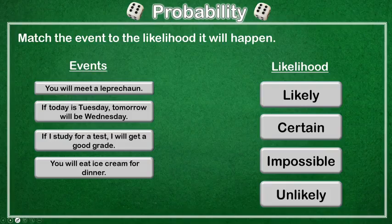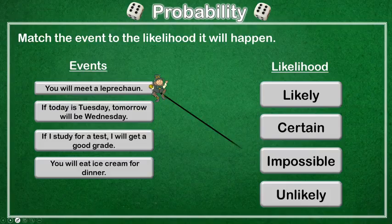Let's try these. We want to match the event to the likelihood it will happen. Event 1: you will meet a leprechaun. That's impossible.